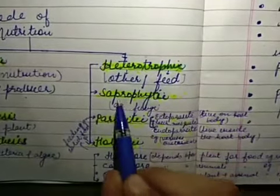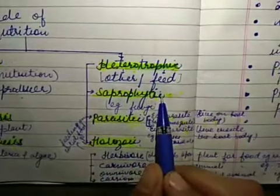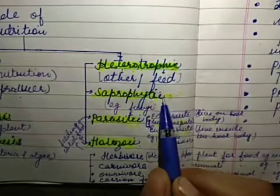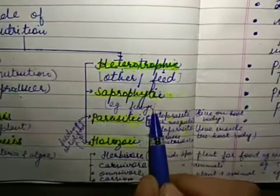It is of three types: saprophytic, parasitic, and holozoic. In saprophytic mode of nutrition, the organisms derive their food from dead and decaying organic matter. For example, fungi.